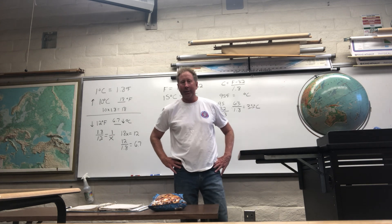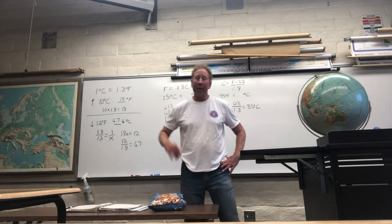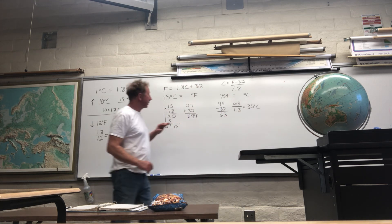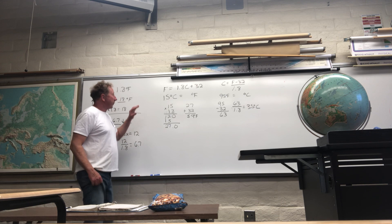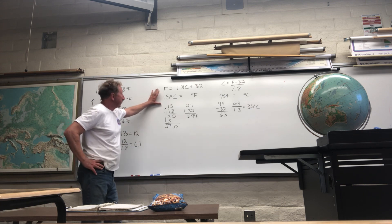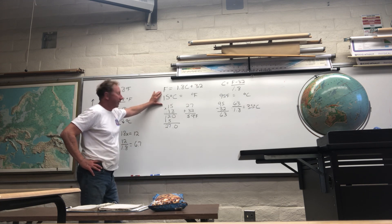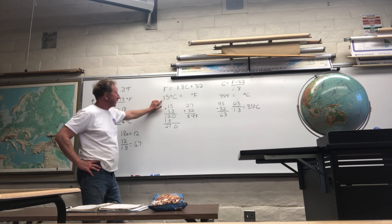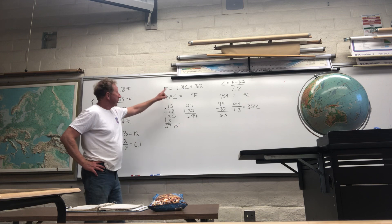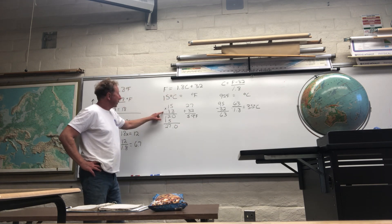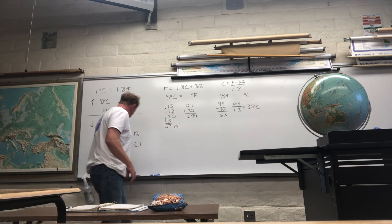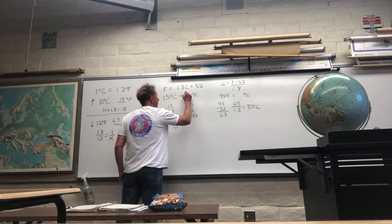We're doing Fahrenheit to Celsius, Celsius to Fahrenheit conversions. I'm going to give you an example. I'm going to do number one first — number one A, it looks like, on the exercise over there. So this is how you do the conversion: Fahrenheit equals 1.8C plus 32. Let's say that it's 15 degrees Celsius — what would it be on the Fahrenheit scale? So you go 15 times 1.8, that gives us 27. Then you simply add 32 to that. So the answer on this one is 59 degrees Fahrenheit.